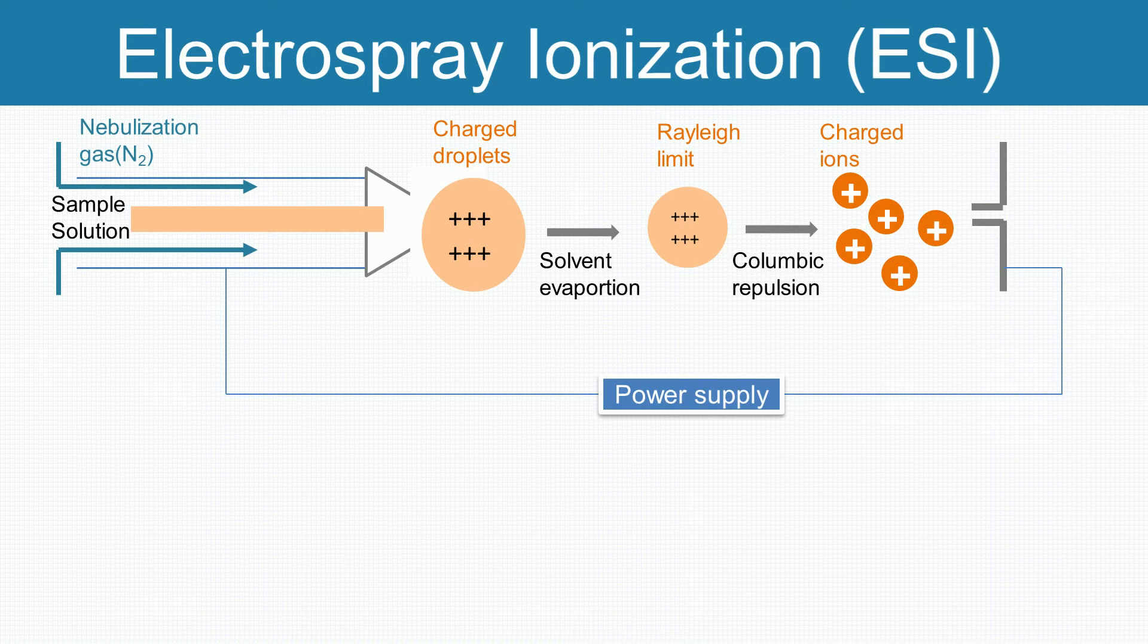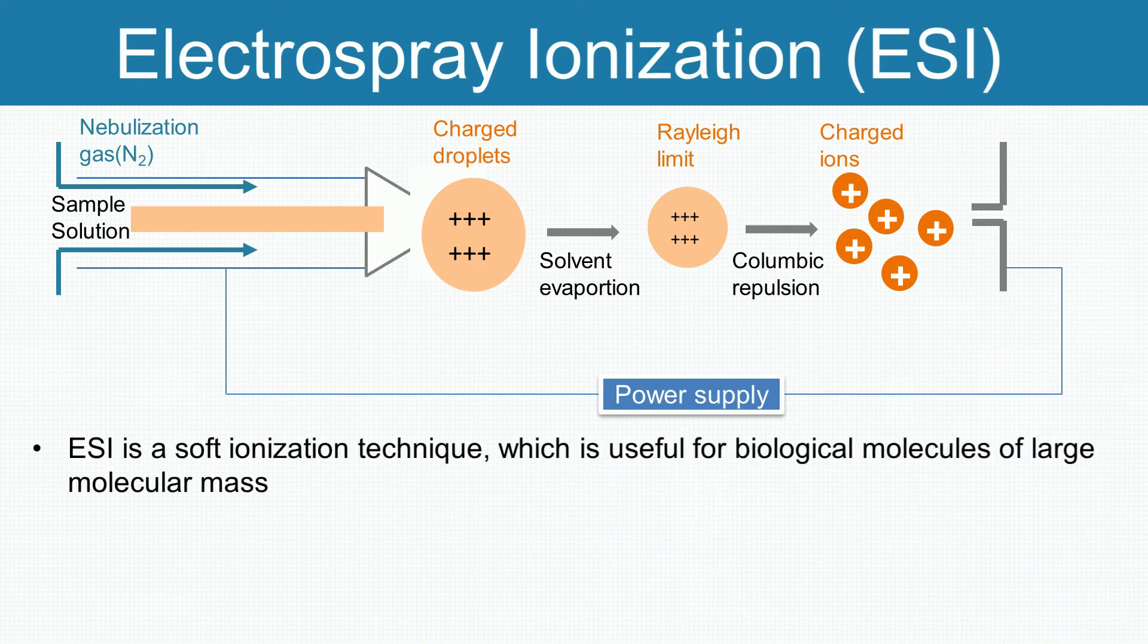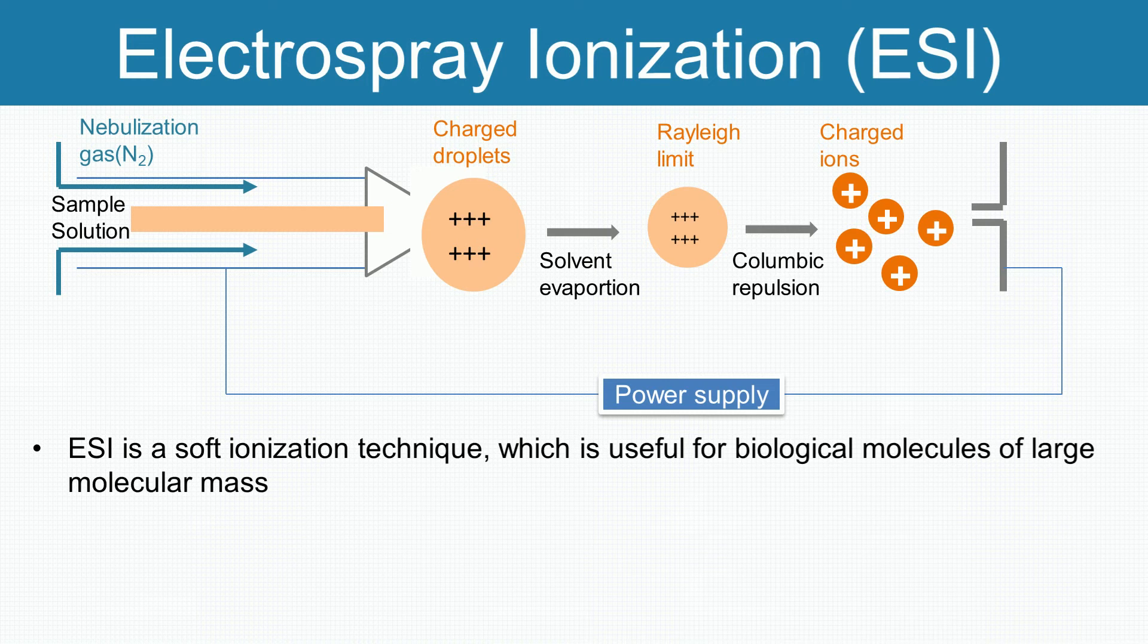Electrospray ionization is a soft ionization technique which is useful for biological molecules of large molecular mass, because this process turns the macromolecule into small ionized droplets instead of fragmentation.